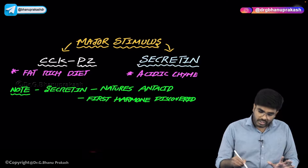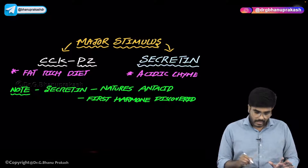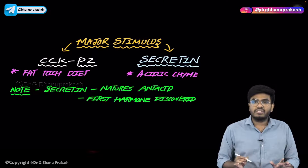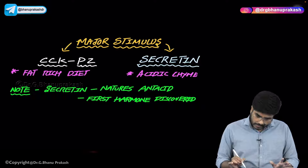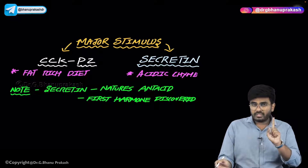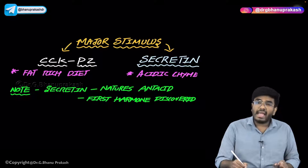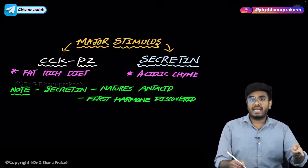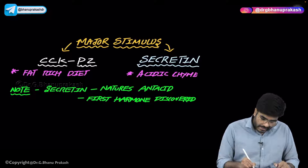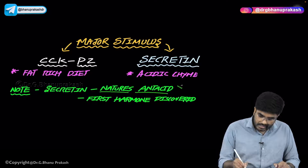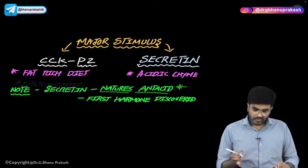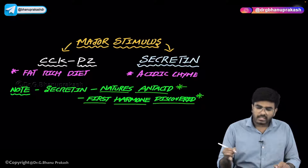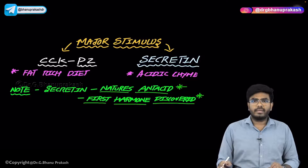To summarize: for secretin, the stimulus is acidic chyme; for cholecystokinin-pancreozymin from the I cells, the stimulus is fat-rich diet. Remember: secretin is anti-acid — secretin helps in production of more bicarbonates which neutralize the acid, so secretin is nature's antacid. And secretin is the first hormone to be discovered in humans. These are important single-liner exam points.